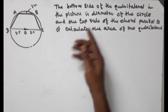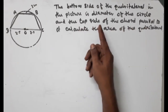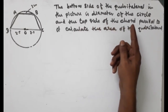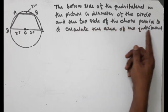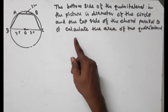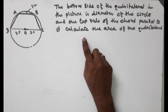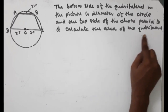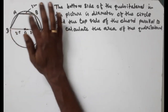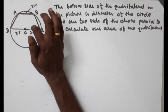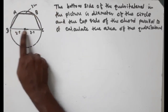The bottom side of a quadrilateral in the picture is the diameter of the circle, and the top side is a chord parallel to it. Calculate the area of the quadrilateral.